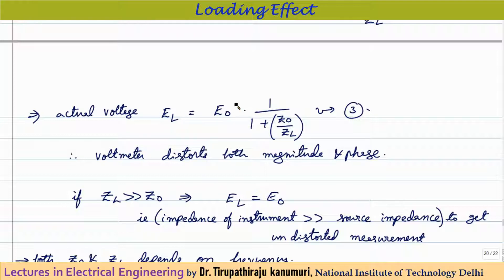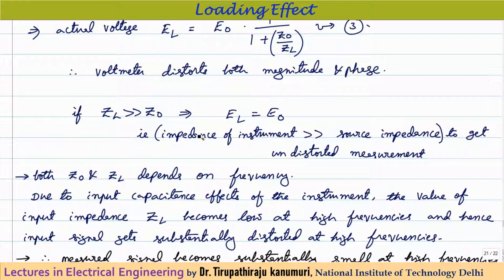For the instrument to measure accurately, EL should equal E0. This is only possible when Z0/ZL approaches zero — that is, when ZL is far greater than Z0. So to avoid loading effect distortion, the impedance of the instrument must be far greater than the source impedance (Thevenin equivalent impedance), and only then will we get an undistorted measurement.